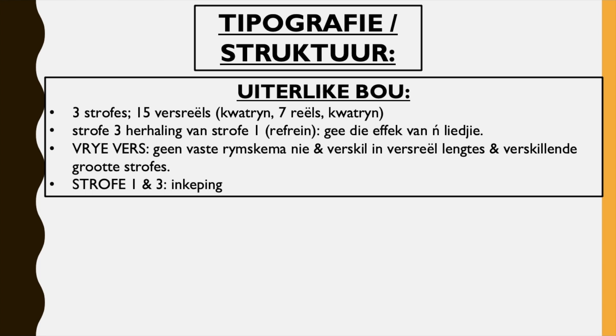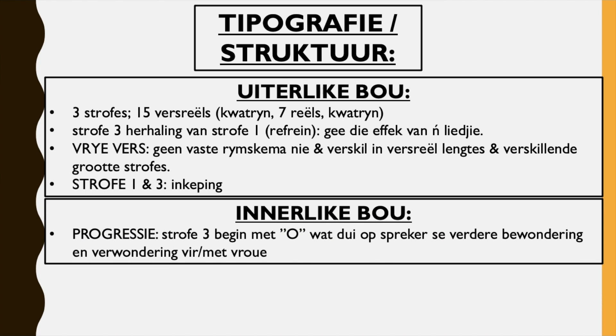And then strofe een en drie en gepping — in stanza one and three we have an indentation. Innerlike bouw is about whether there is progression in the poem. So progressie — strofe drie begin met 'oe', but die oop die spreker se fadere bewondering en verwondering vir of met vroue. So there is progression because although stanza three is a repetition of stanza one, it starts with 'oe', which indicates the further admiration and amazement that the speaker has for women.